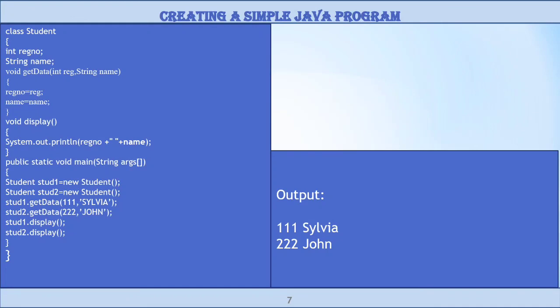And suppose if you want to display the values, you have to call the display method which helps to print the value triple one Sylvia. And if you call the second object by using the display method, triple two and John will be printed. Thank you for watching.